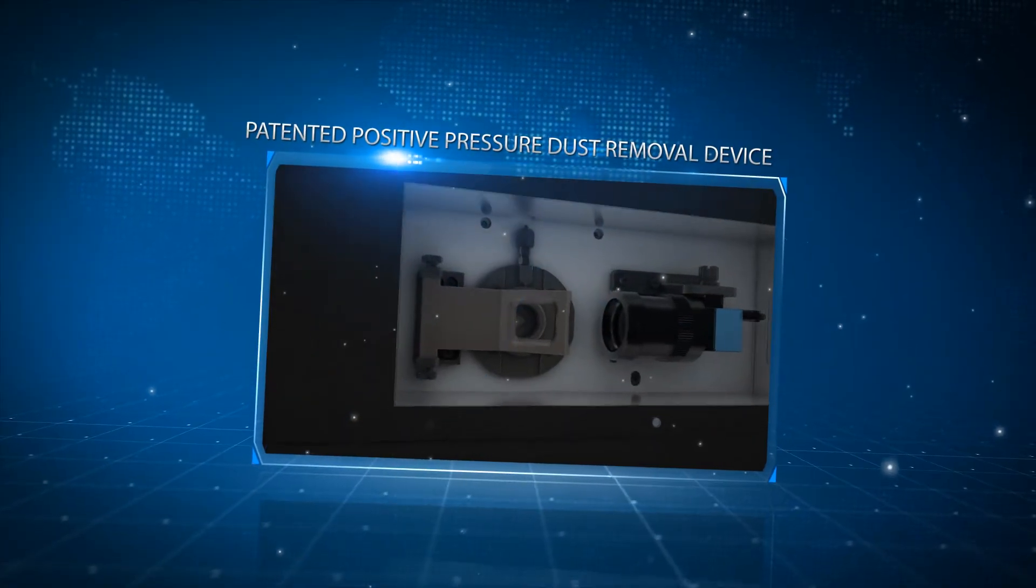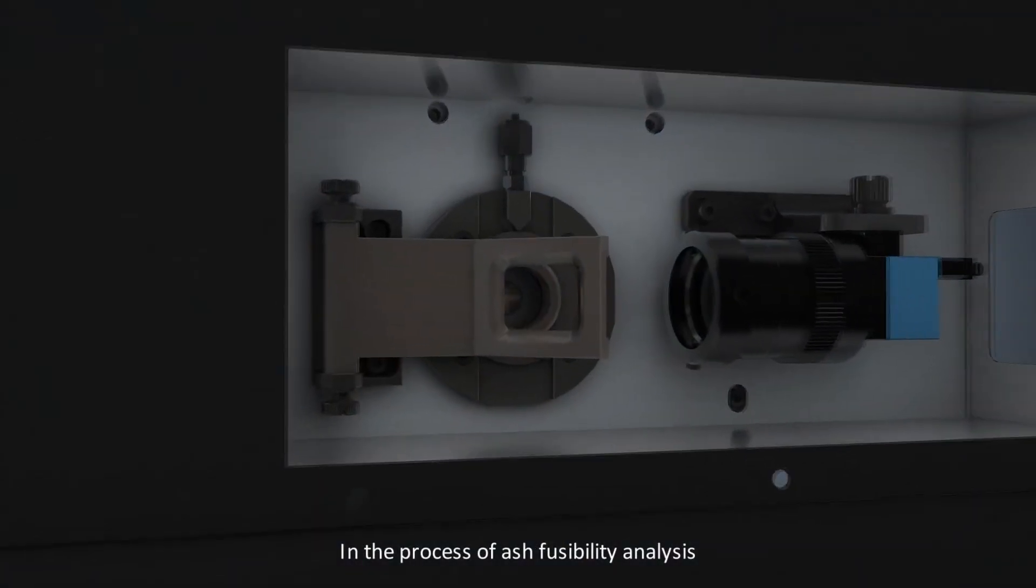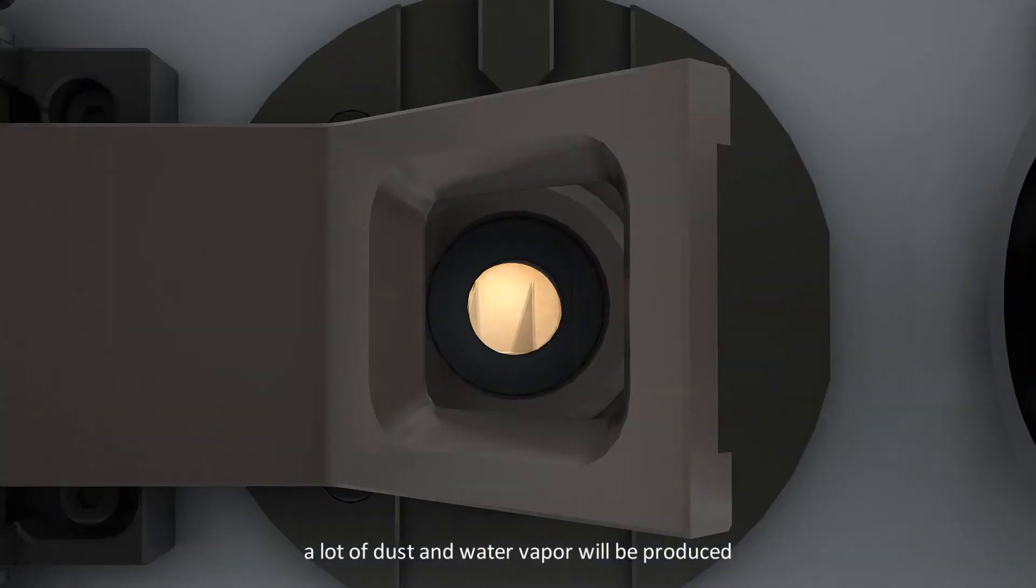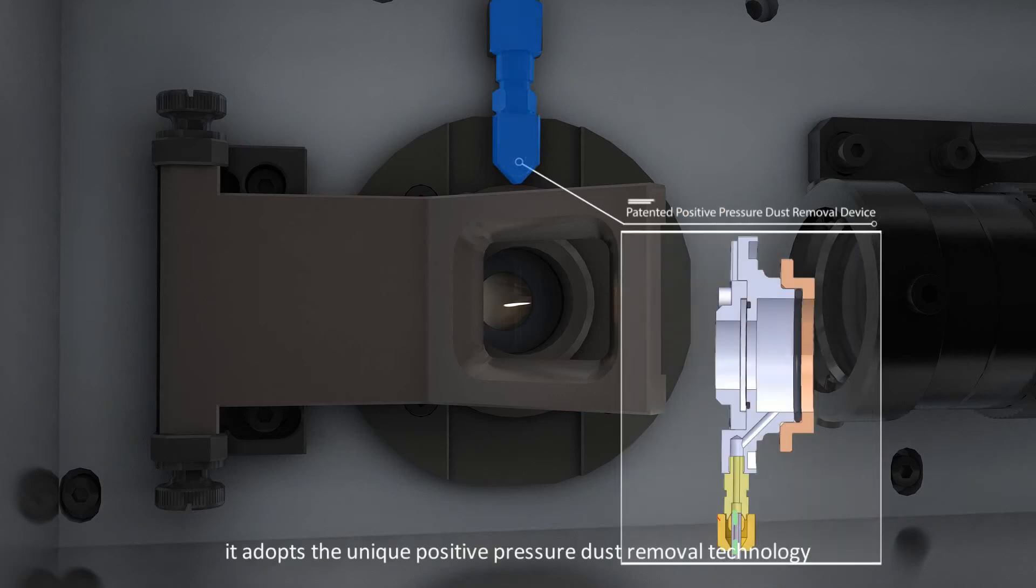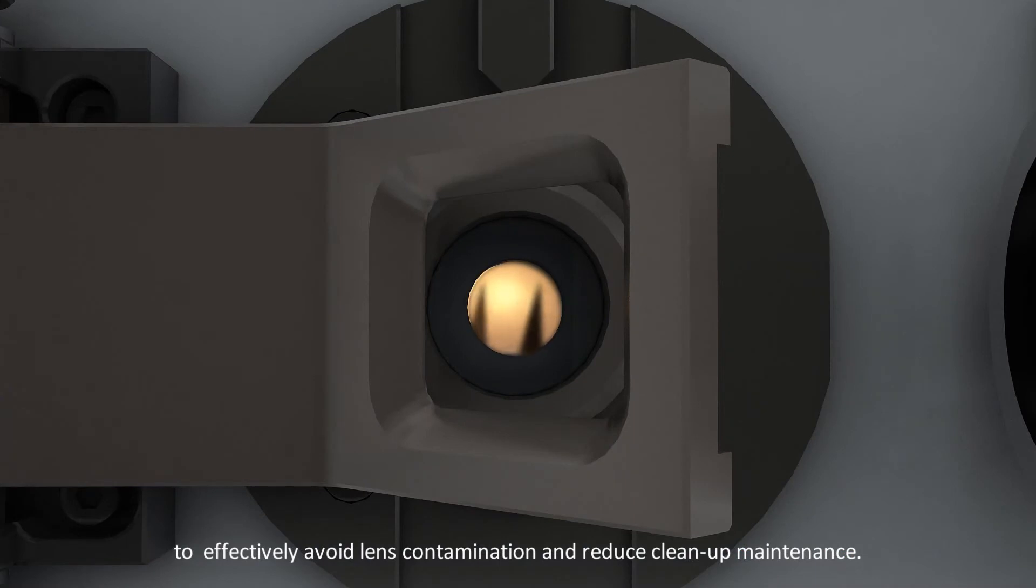Patented Positive Pressure Dust Removal Device: In the process of ash fusibility analysis, a lot of dust and water vapor are produced, which can contaminate the observing lens. Traditional instruments require the lens to be cleaned before analysis, while the 5E AF4115 adopts unique positive pressure dust removal technology to effectively avoid lens contamination and reduce cleanup maintenance.